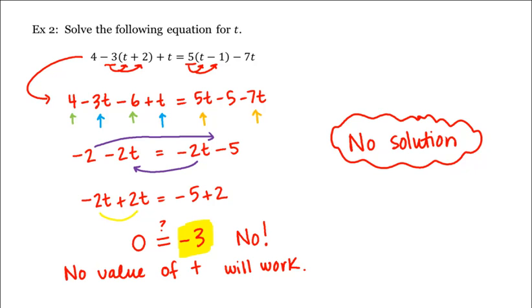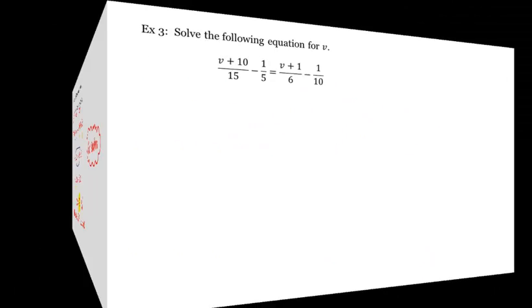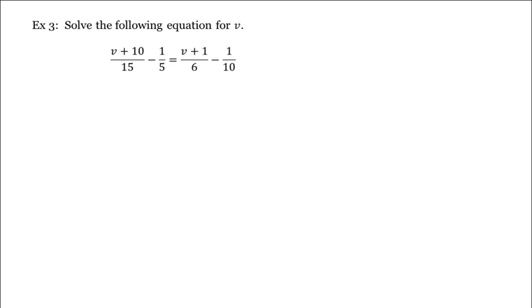Let's see another example. This example is different in that we have fractions. There are different approaches to solving such an equation, but the approach students seem to like best is to find the least common multiple of these denominators so we can multiply both sides of the equation by that least common multiple to eliminate the fractions. The least common multiple of these denominators is 30.